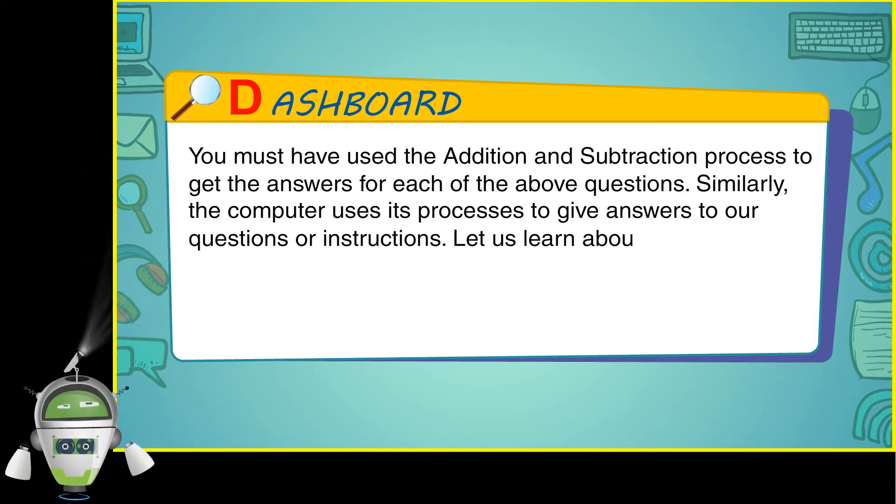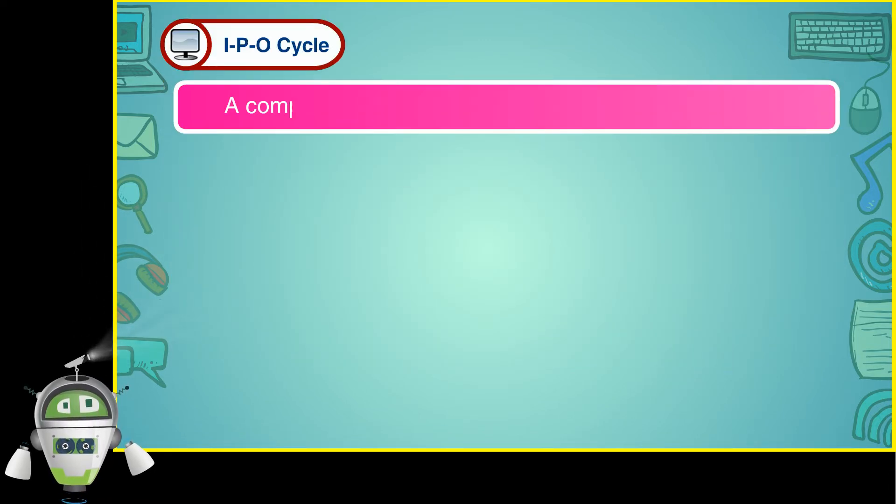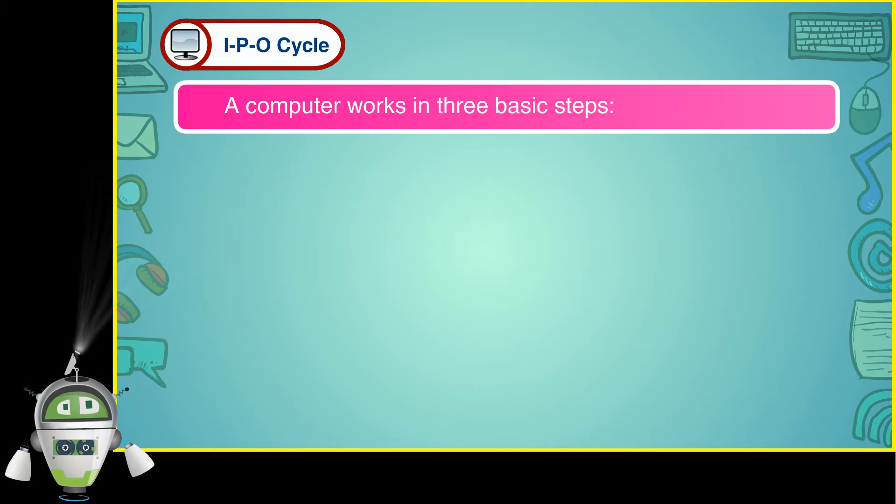Let us learn about this process. IPO cycle. A computer works in three basic steps.